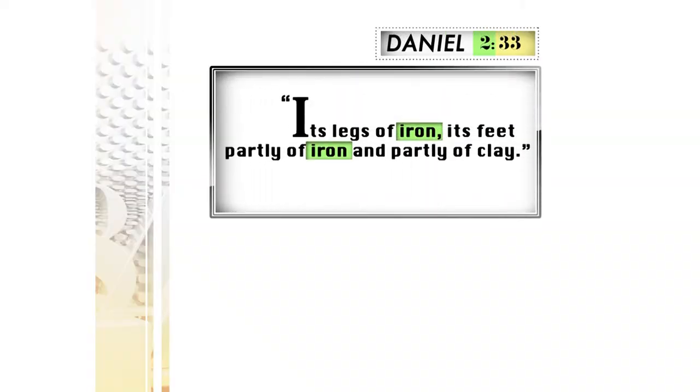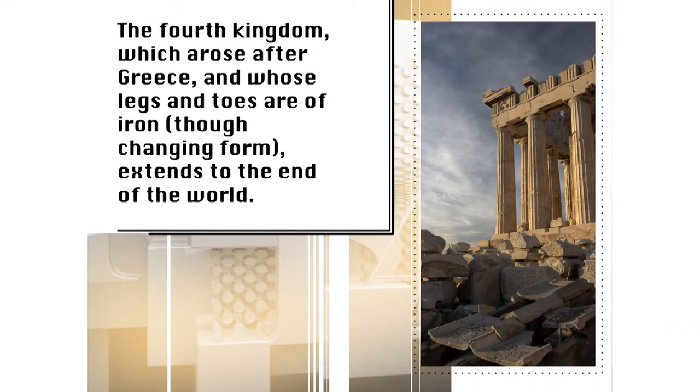The legs of iron, its feet part of iron and part of clay — in other words, the iron that starts in the legs remains in the feet. The iron stays there all the way to the end. So the point is: the kingdom that began after Greece, which starts in the leg, extends all the way to the end of the world. It will be there to the bitter end. The fourth kingdom, which arose after Greece and whose legs and toes are of iron, though changing form, extends to the end of the world.